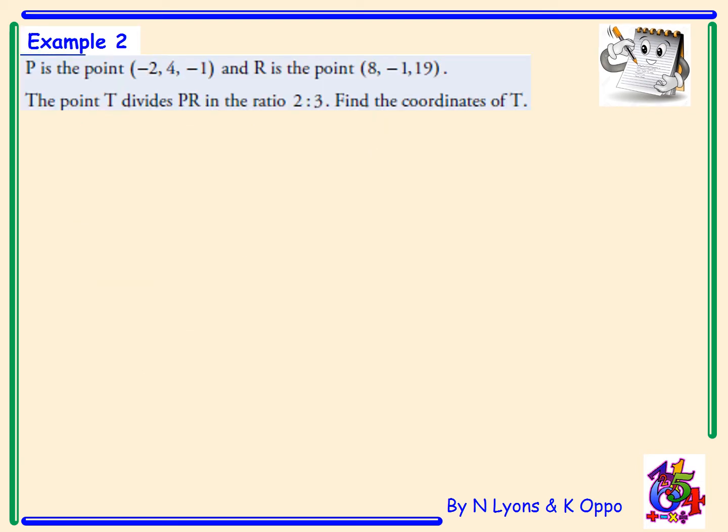Example 2: P is the point (-2,4,-1) and R is the point (8,-1,19). The point T divides PR in the ratio 2:3. Find the coordinates of T. Again, we'll start by writing out our formula in relation to the question and also state our ratio 2:3, M:N.